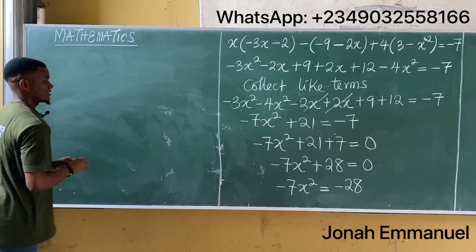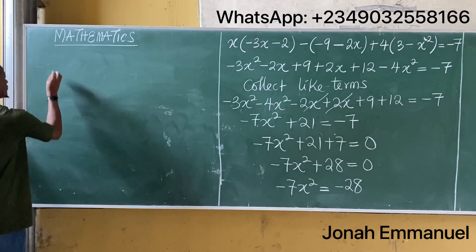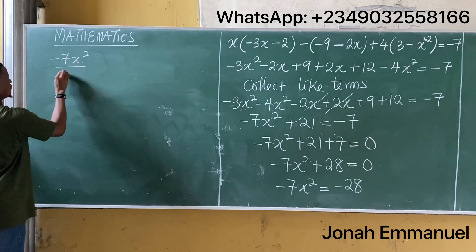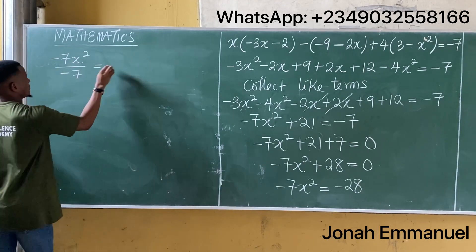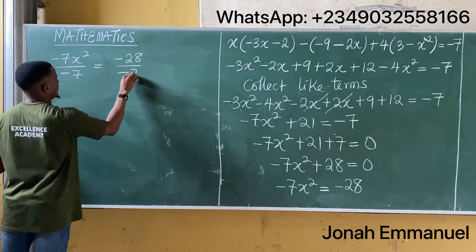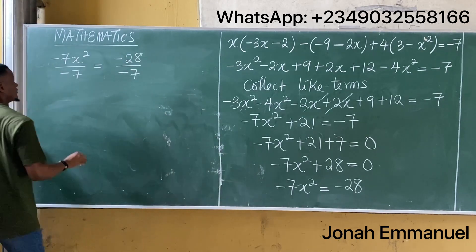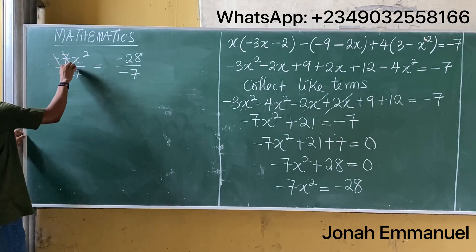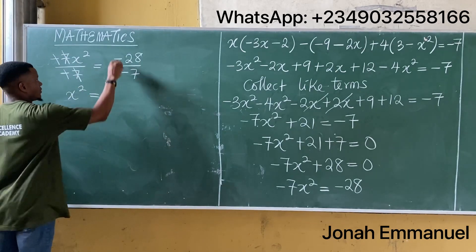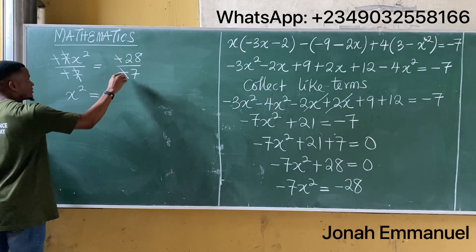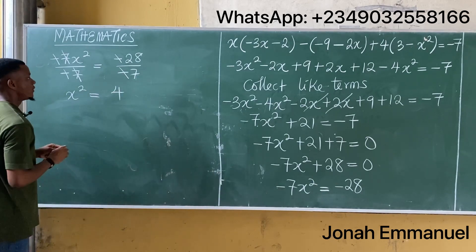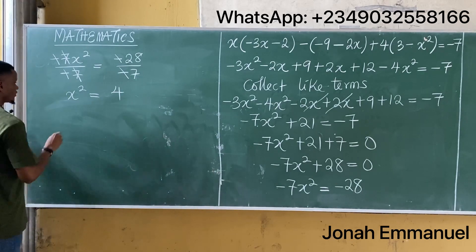Dividing both sides by minus 7: minus 7x squared over minus 7 equals minus 28 over minus 7. The minus 7s cancel on both sides, giving x squared equals 4.